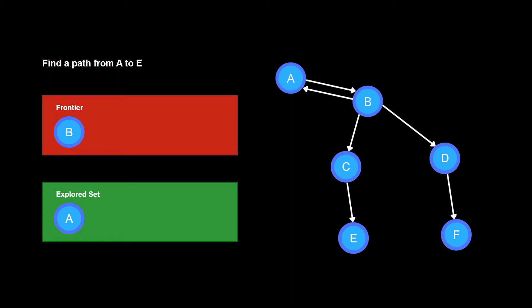The frontier is not empty, so we remove node B from the frontier. Node B does not contain the goal state, so we add node B to the explored set. By expanding node B, we get nodes A, C, and D as resulting nodes. Node A is already in the explored set, while nodes C and D are not in the frontier or the explored set, so we add only nodes C and D to the frontier. The frontier is not empty, and now the question arises: which node do we have to remove from the frontier? Choosing which node to remove from the frontier is what makes search algorithms different from each other.